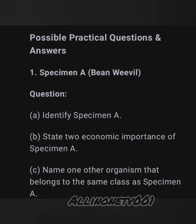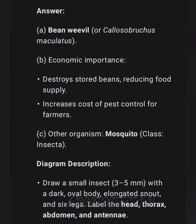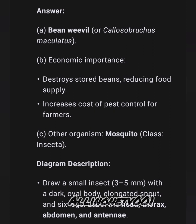The answer for question A is bean weevil, botanical name Callosobruchus maculatus. Answer for question B — economic importance of bean weevil: one, destroys stored beans reducing food supply; two, increases the cost of pest control for farmers. Answer for question C — other organisms in the same class include mosquito, class Insecta. The diagram description is there; you can view and label it.